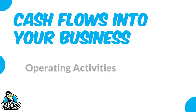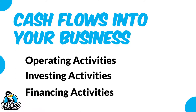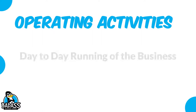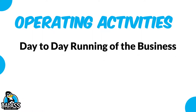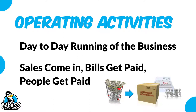Cash flows into your business three basic ways. For the vast majority of small business owners, it's going to be under operating activities. Operating activities are basically any of the day-to-day activities you do for running the business — sales come in, bills get paid, people get paid, and at the end of the day, hopefully there's some profit for you to make owner's wages or reinvest back into the business.